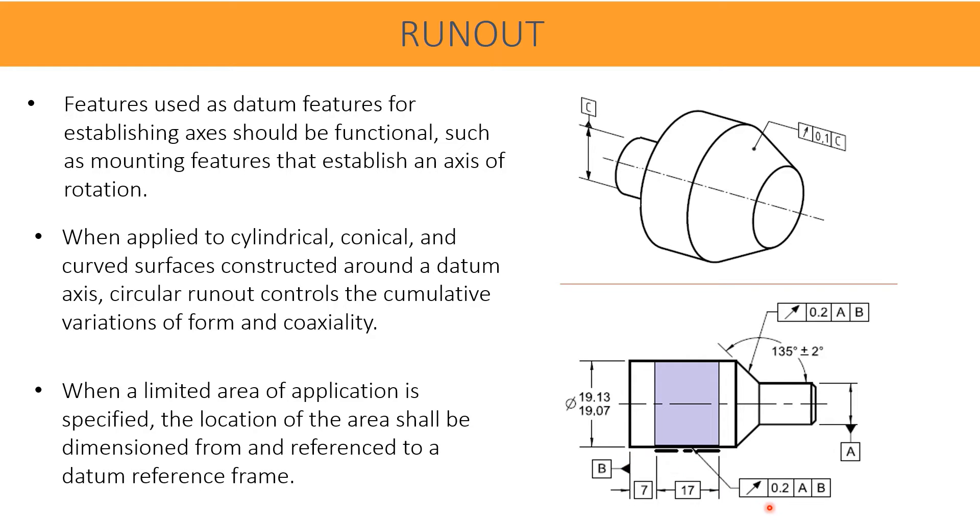The next control of the runout of this diameter is given as runout 0.2 with respect to A and B. But additionally, the control is only applied to the length of 17 mm. This is a basic dimension. How to reach for the measurement or to control the runout is established from datum B. From B, 7 mm onwards, the 17 mm is the length where runout is controlled.